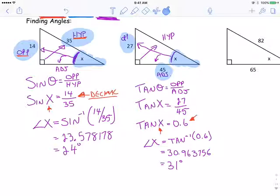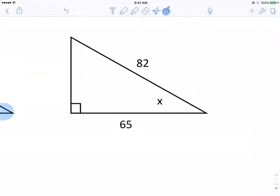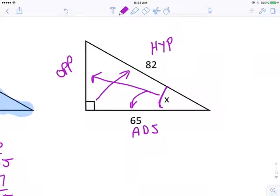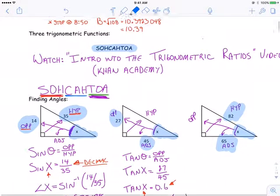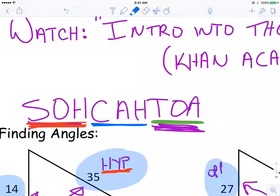Now, our last example. Very similar. Here's our triangle. Label your triangle. Hypotenuse. This is my angle. This would be my opposite side. This would be my adjacent side. What trig function relates? This is what I'm trying to solve for. I'm trying to solve for this angle. I have the hypotenuse. I have the adjacent. What trig function relates adjacent and hypotenuse?